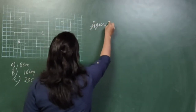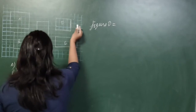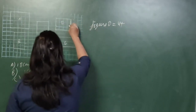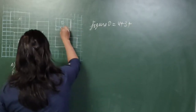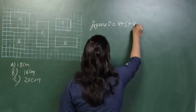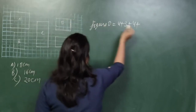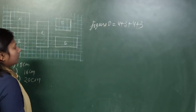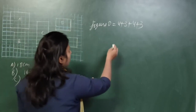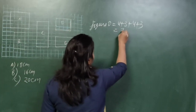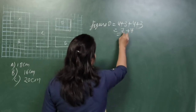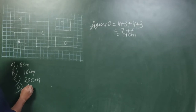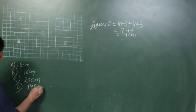Now figure D. Sum of all sides: counting the boundaries gives 4, then 3, then 4, then 3. So 4 + 3 = 7, and 4 + 3 = 7, giving 7 + 7 = 14 centimetres. The perimeter of figure D is 14 centimetres.